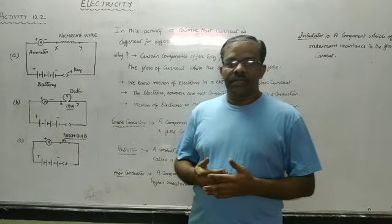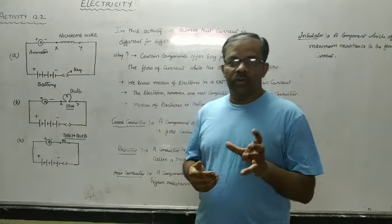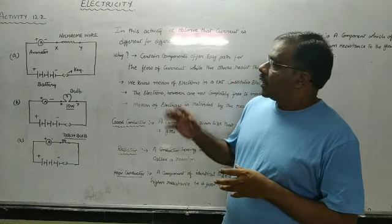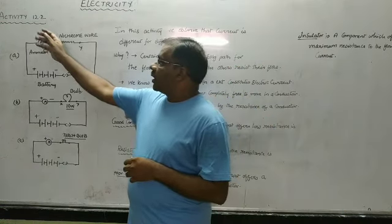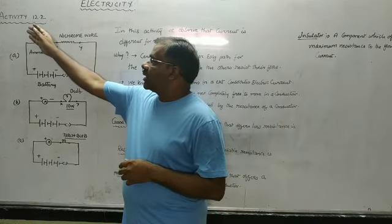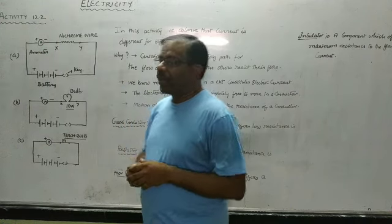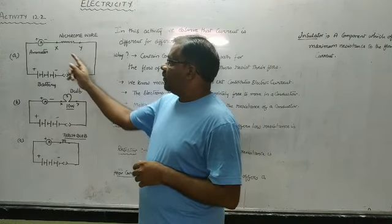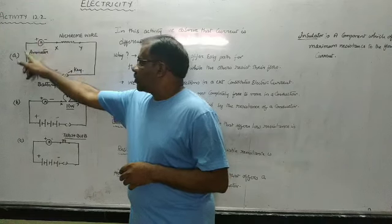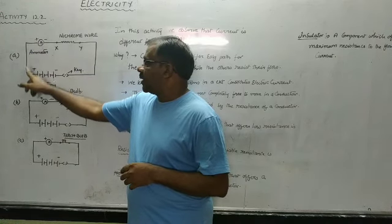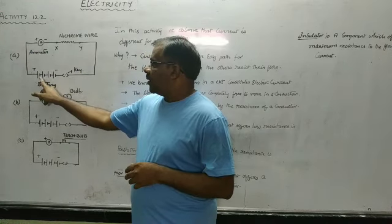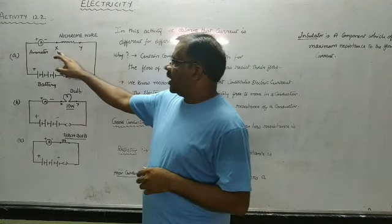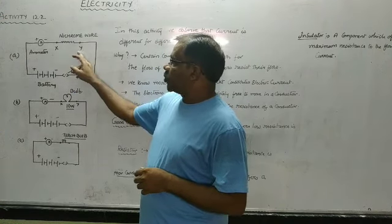In our earlier class we learned about what resistance is. Now let us try to understand what is explained in activity 12.2. In this activity we are given a circuit consisting of an ammeter and a four-cell battery, and we are given a gap called XY.